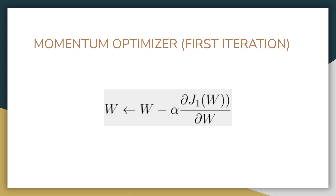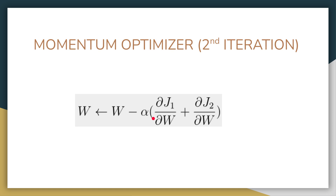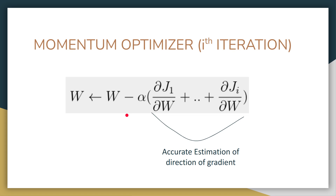In the first iteration of the momentum optimizer, just as in mini-batch gradient descent, we calculate the cost function, calculate the gradient, and update our weights. In the second iteration, we take the aggregate of the current gradient and the gradient from the previous iteration and update weights accordingly. In the ith iteration, we take the sum of all previous gradients — from del J1/del W in the first iteration up to del Ji/del W in the current iteration. This sum gives a more accurate estimate of the gradient direction.